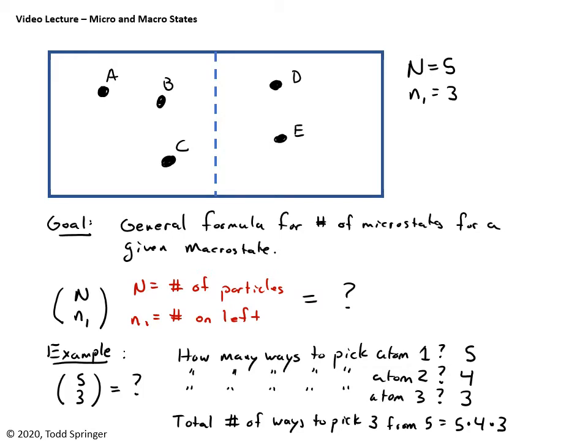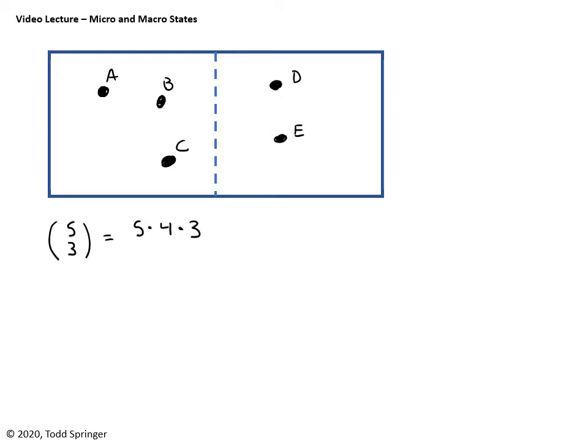However, that's not quite the whole story because the 3 that I pick, this is counting, for example, if I pick A first and then B second and then C third, I have chosen A, B, C. But if I chose B first and then A second and then C third, I'd have B, A, C. And those aren't different. That's still the same microstate. I still have the same three balls on the left. So we need to correct for this factor.